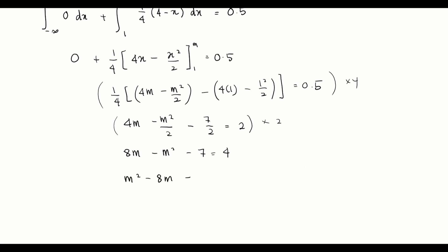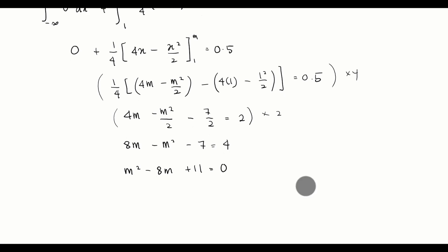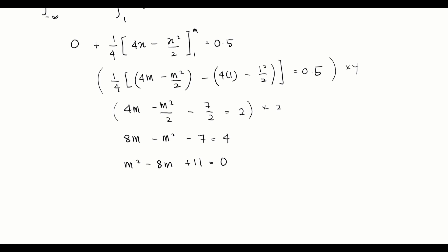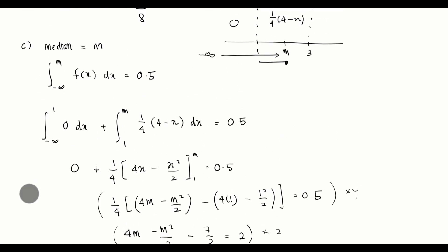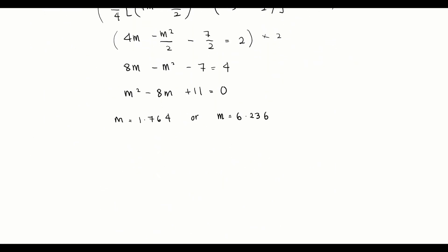Simplifying: m² - 8m + 11 = 0. This is a quadratic equation. Solving it gives two answers: m = 1.764 and m = 6.236. Since m must be between 1 and 3, we reject m = 6.236 and conclude that the median is m = 1.764.